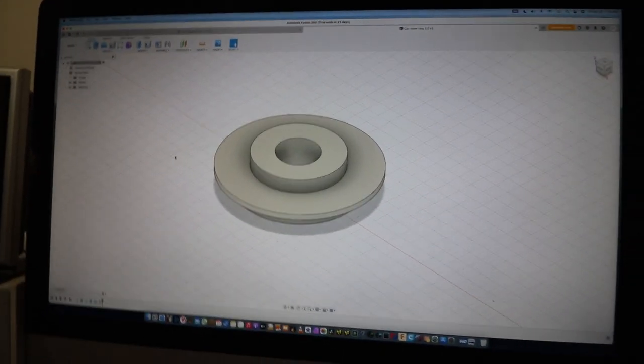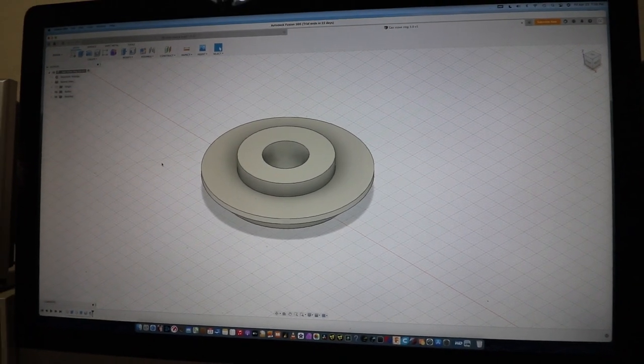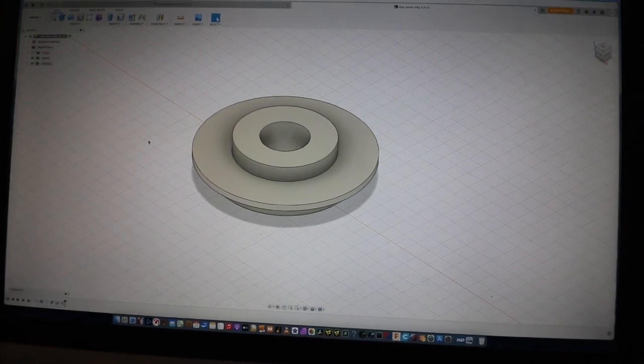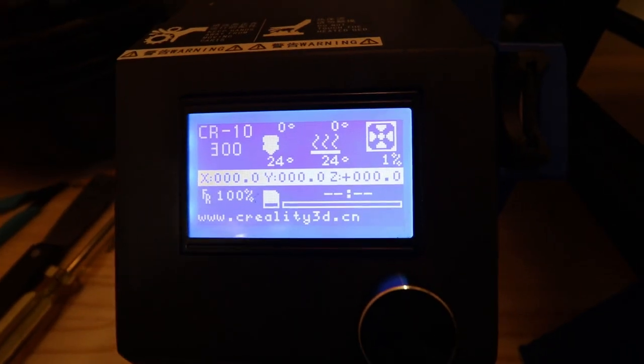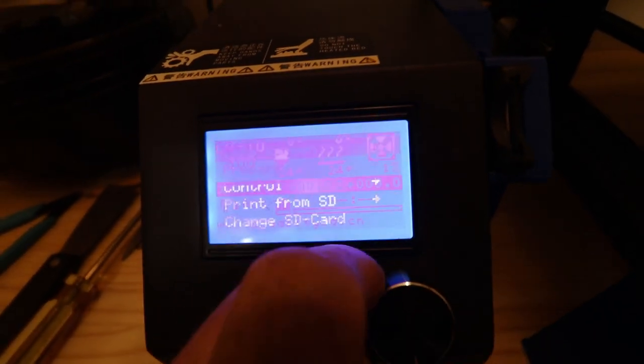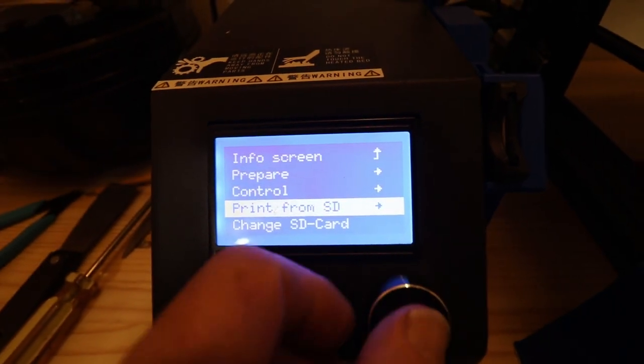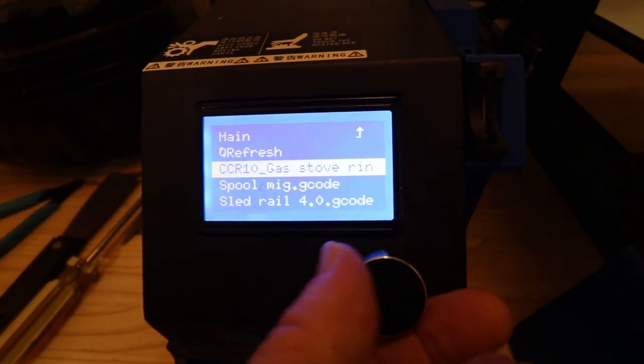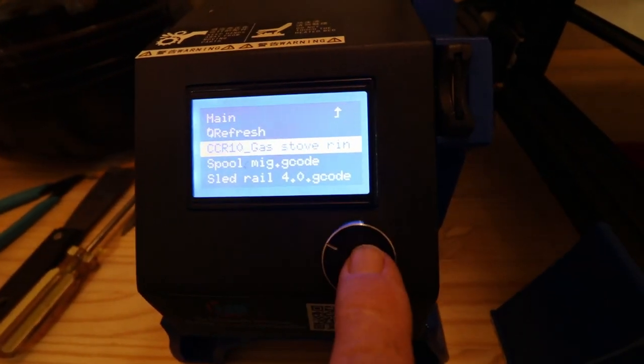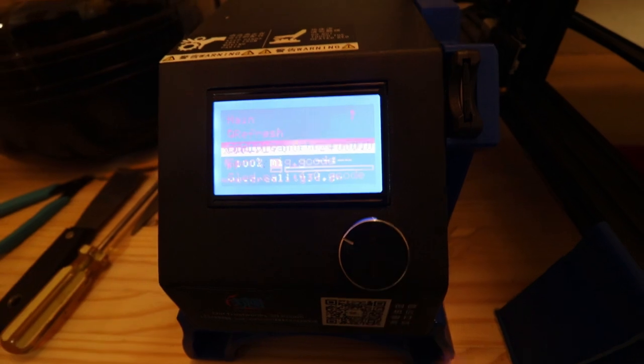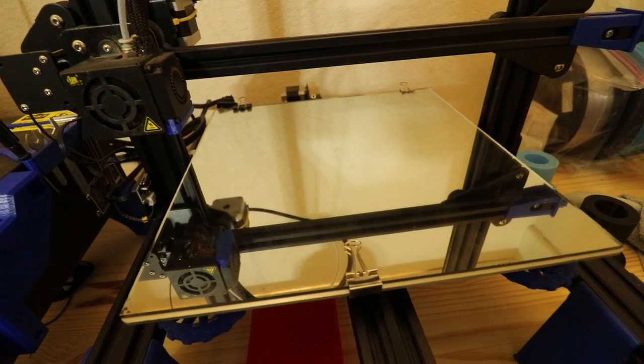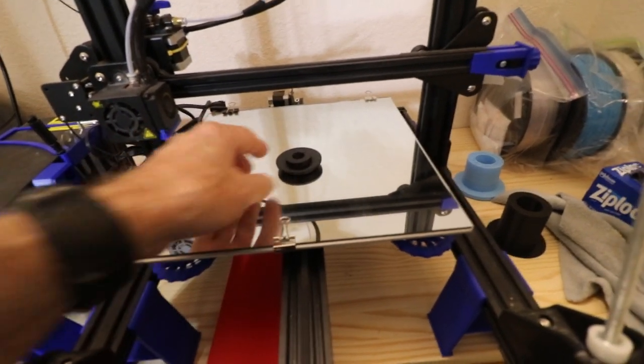So I'm not going to get into Fusion 360 too much because it would take forever to explain that. But yeah, this would be the next step. So let's go to the step after that. And over here at the 3D printing, we'll come down to print from CD and I titled this one Gas Stove Ring and hit the go.